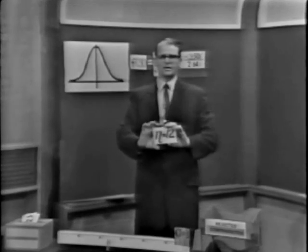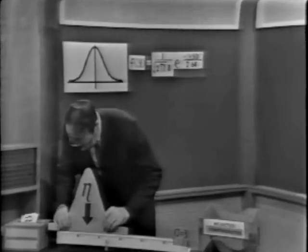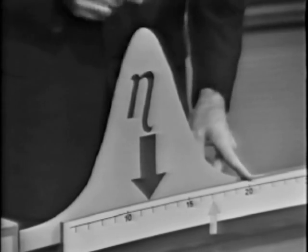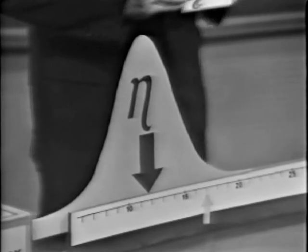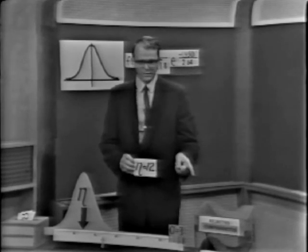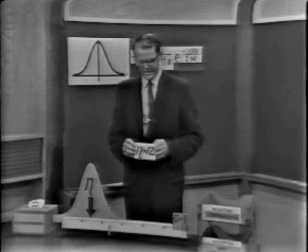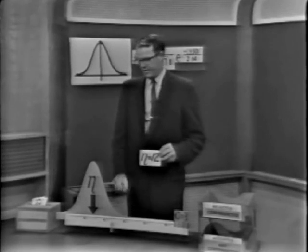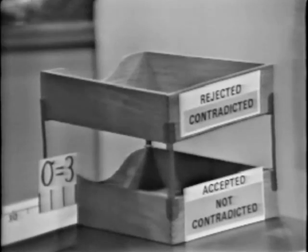Suppose someone says eta is 12. We locate the distribution at 12 and calculate the normal deviate: z = (17 − 12) / 3 = 5/3 = 1.67. That 1.67 is larger than 1.64 — it falls in the critical region. So this is a rare event, and we reject eta = 12 as contradicted by the data.